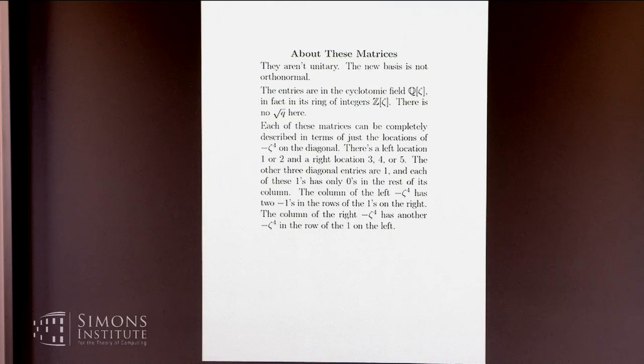But they're nicer. They don't, for instance, involve that square root of q. The entries of the Fibonacci, of the Formanek matrices, are entirely cyclotomic integers. So things are nicer in that respect. The last paragraph, that wall of text up there that begins with, each of these can be completely described. That's saying how to read off the whole matrix once you know where the minus-zeta to the fourths are.